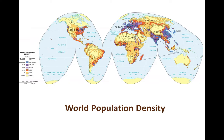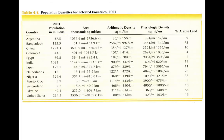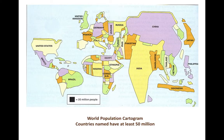Here's a world population density map that really shows you where people live. We can also take data from a table — population in millions, density, and so on — and represent it visually. This is a cartogram, which distorts the map to show you where the population centers are. You can see that India and China have the biggest populations.